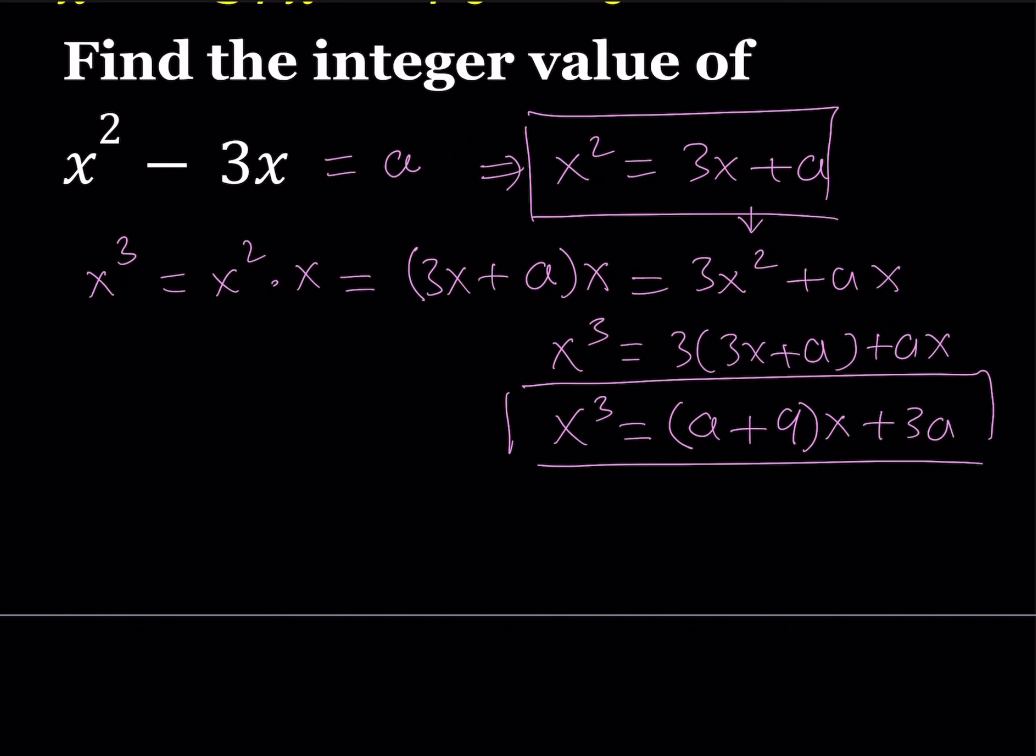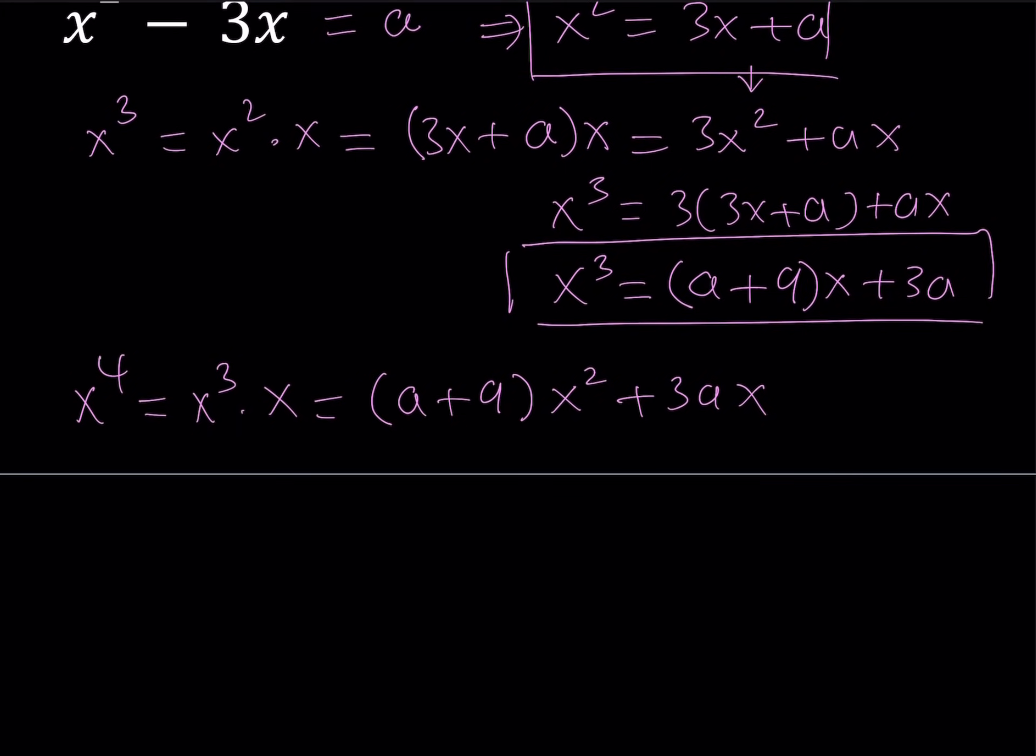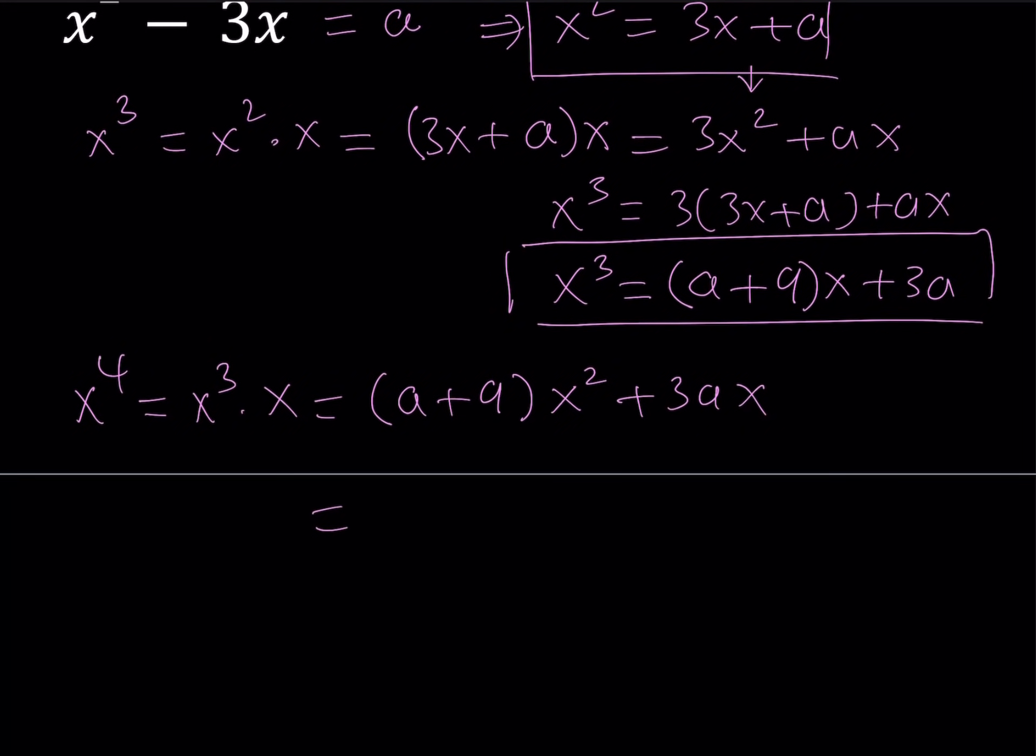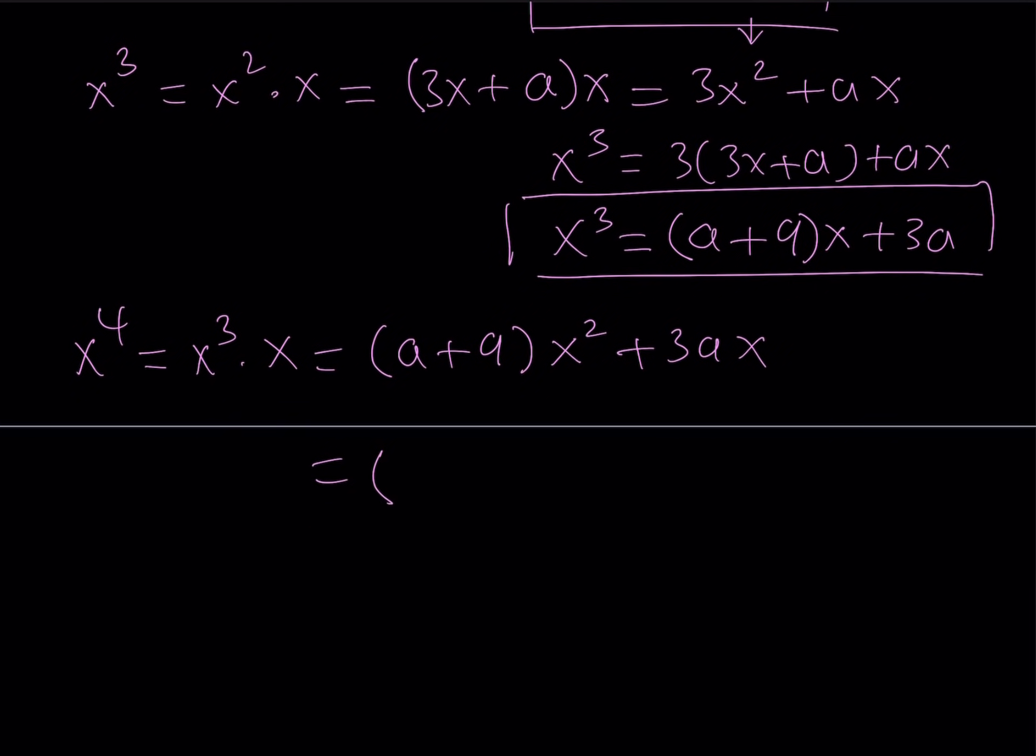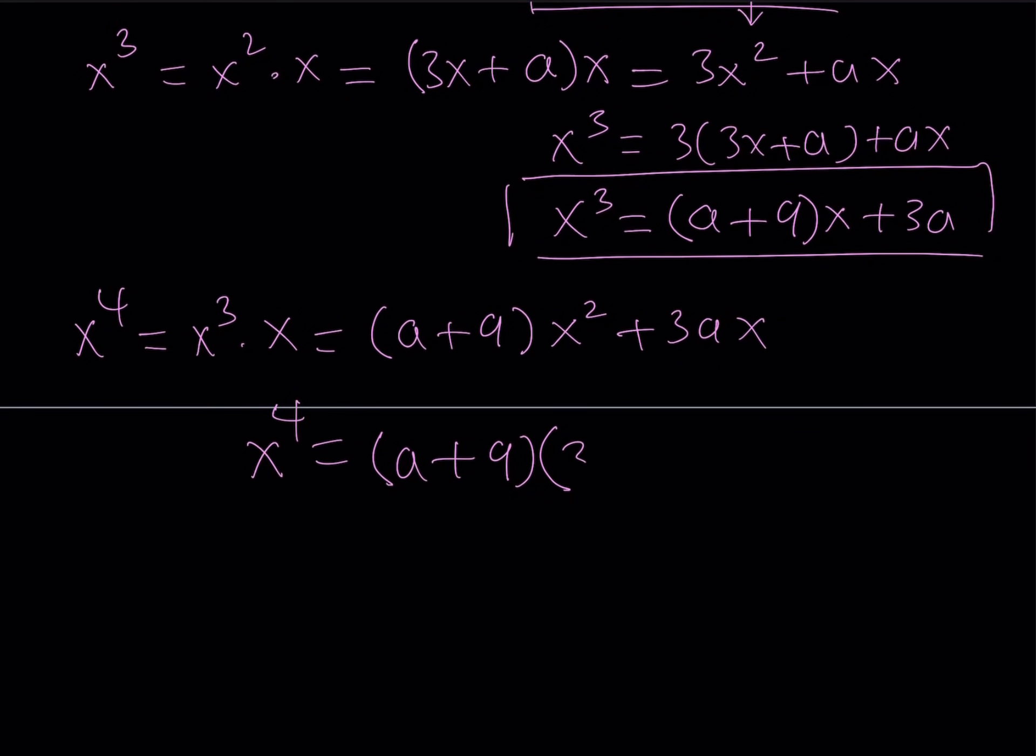Now let's go ahead and evaluate x⁴ using the same idea. Multiply x³ by x. And that's going to be (a + 9)x. Or I could probably just do the following. Since multiplying by x is fairly easy, let me go ahead and just write it this way. (a + 9)x when multiplied by x is going to be x squared, and 3a will be 3ax. Now, I want to replace x² with this one, 3x + a, one more time.